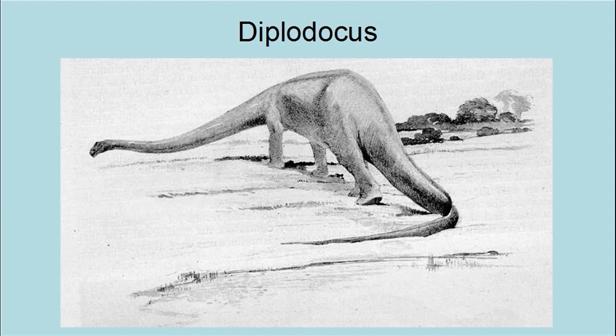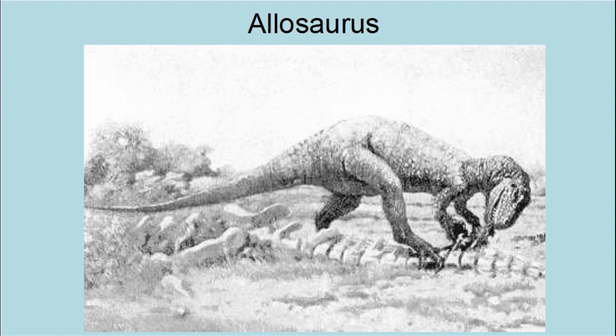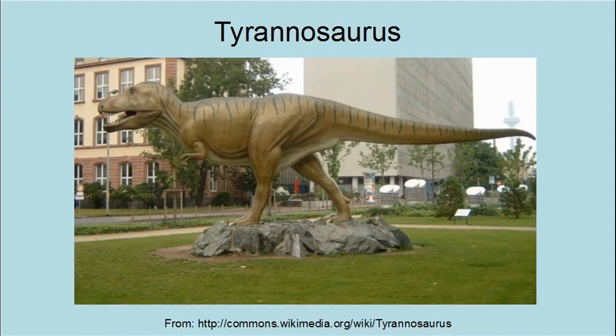We will see more of this later on. This picture depicts a couple of Oviraptors. Here is a meat-eating dinosaur known as Allosaurus. This is the most famous of all dinosaurs, Tyrannosaurus rex.